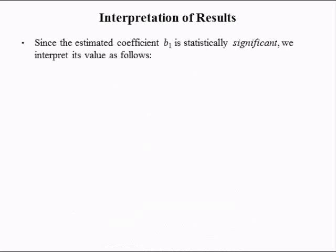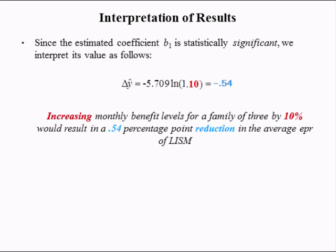Now for the fun part — the interpretation of the results. Since the estimated coefficient B1 is statistically significant, we interpret its value as follows. The difference in the predicted value of Y, the employment population ratio of low-income single mothers, is equal to negative 5.709 times the natural log of 1.10, which equals negative 0.54. This means increasing monthly benefit levels for a family of 3 by 10% will result in a 0.5 percentage point reduction in the average employment population ratio of low-income single mothers. This is how you interpret coefficients when the X variable has been logged.